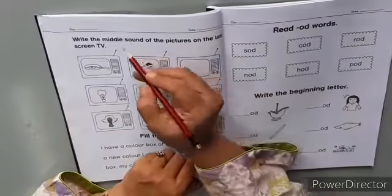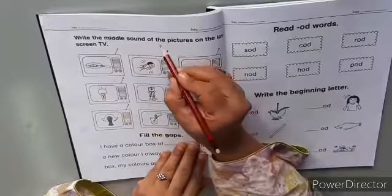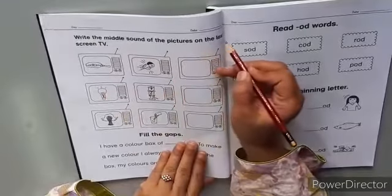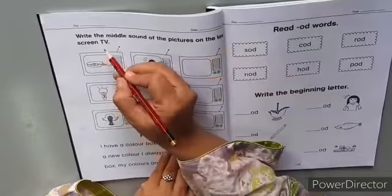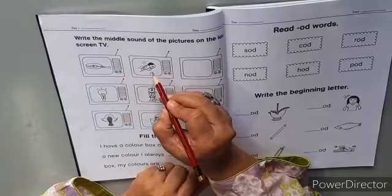Now read the caption. Write the middle sound of the pictures on the screen. What is this? It is a pan. What is this? It is a chair.